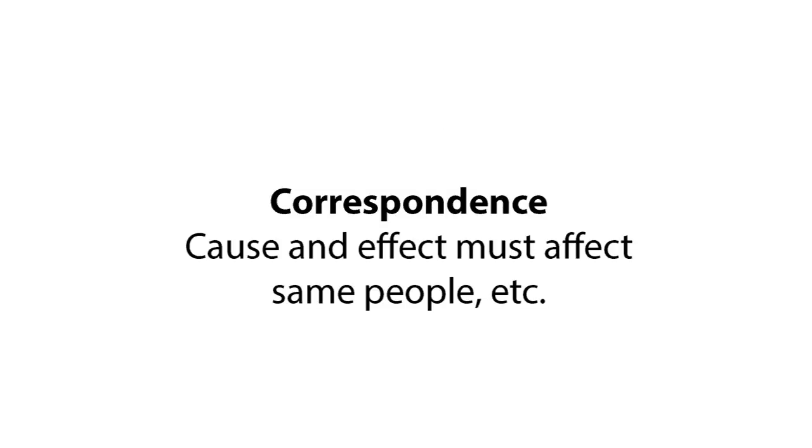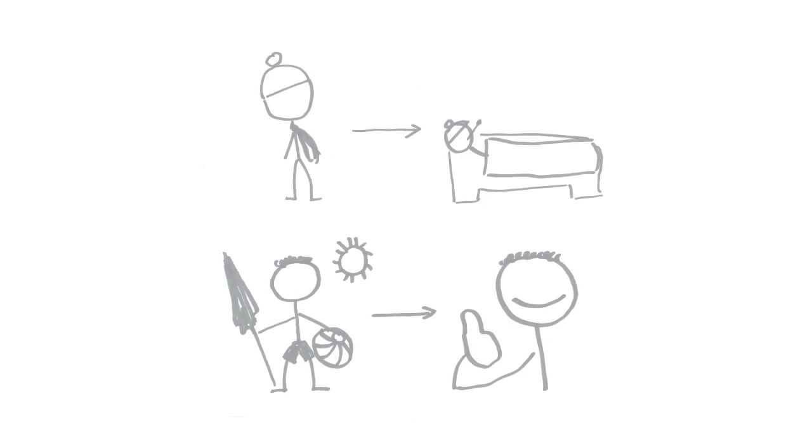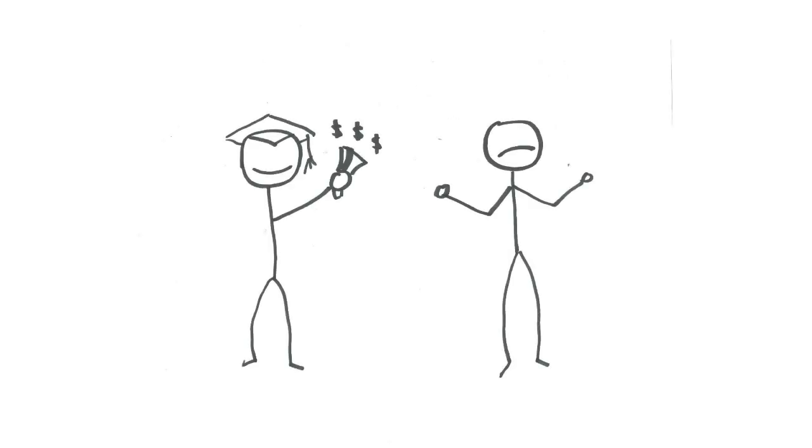Correspondence means that the cause and effect appear in the same person, or country, or whatever unit you're analyzing. If being cold causes you to get sick, then the people who are exposed to cold should be more likely to be sick. If being educated causes you to earn more money, then people with more education should be more likely to earn more money. Correspondence, or what your statistics teacher might have referred to as correlation, is only one basic criterion for ascertaining causality. There are two others.